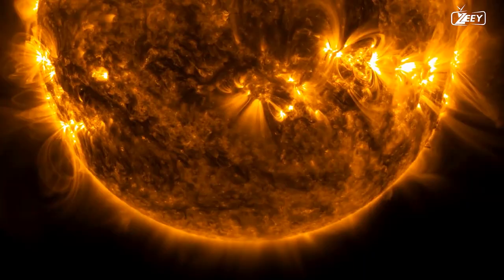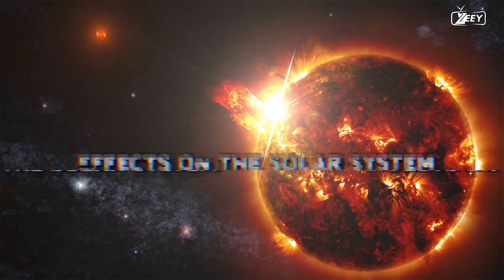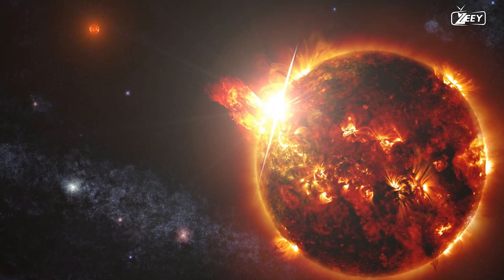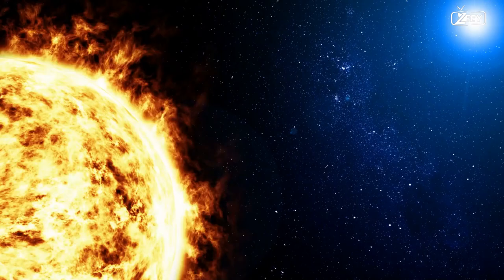Effects on the Solar System. At its closest approach, Glee 710 will be approximately 16,000 astronomical units, or approximately 240 trillion kilometers, from our solar system. This may still seem like a vast distance, but it is close enough to have significant effects on our solar system.